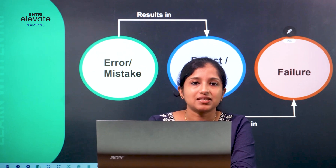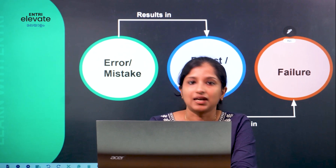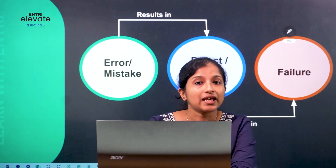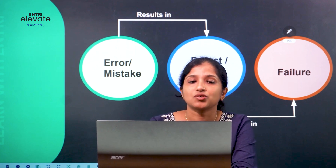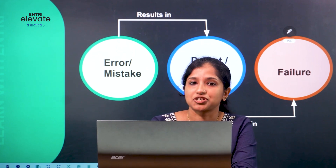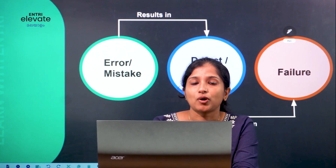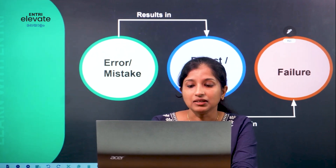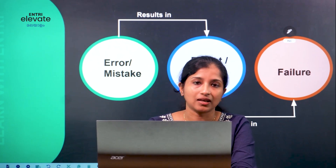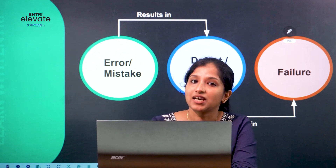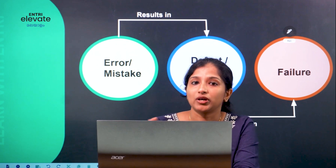Errors or mistakes: a software product is built in the development stage. There is a mistake on the development side — because of a syntax error in the code. That is called an error or mistake. When a product is developed with that error, it is called a defect or a bug.